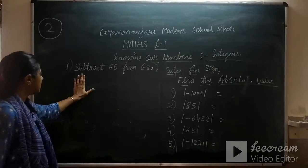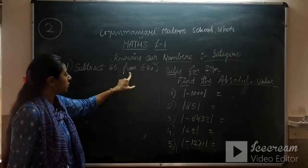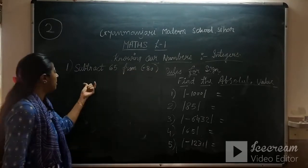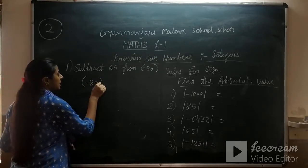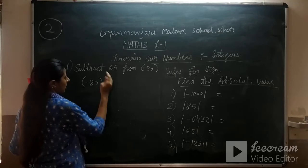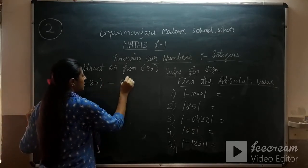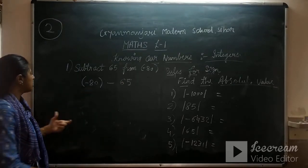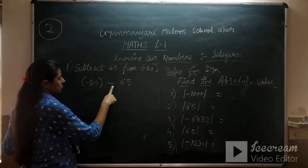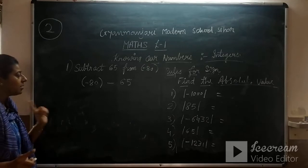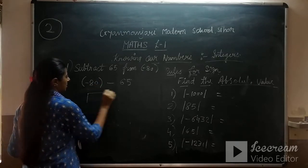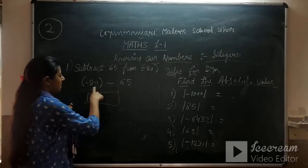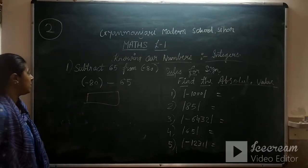The first sum is: subtract 65 from minus 18. Since it says 'from', this number will be first. So minus 18 will be written first, then subtract, so in between it will be minus, and then 65. Minus minus will become plus but the sign will be minus. So you have to find out the sum — minus minus becomes plus — and both integers will be added but the sign will be negative in the answer.